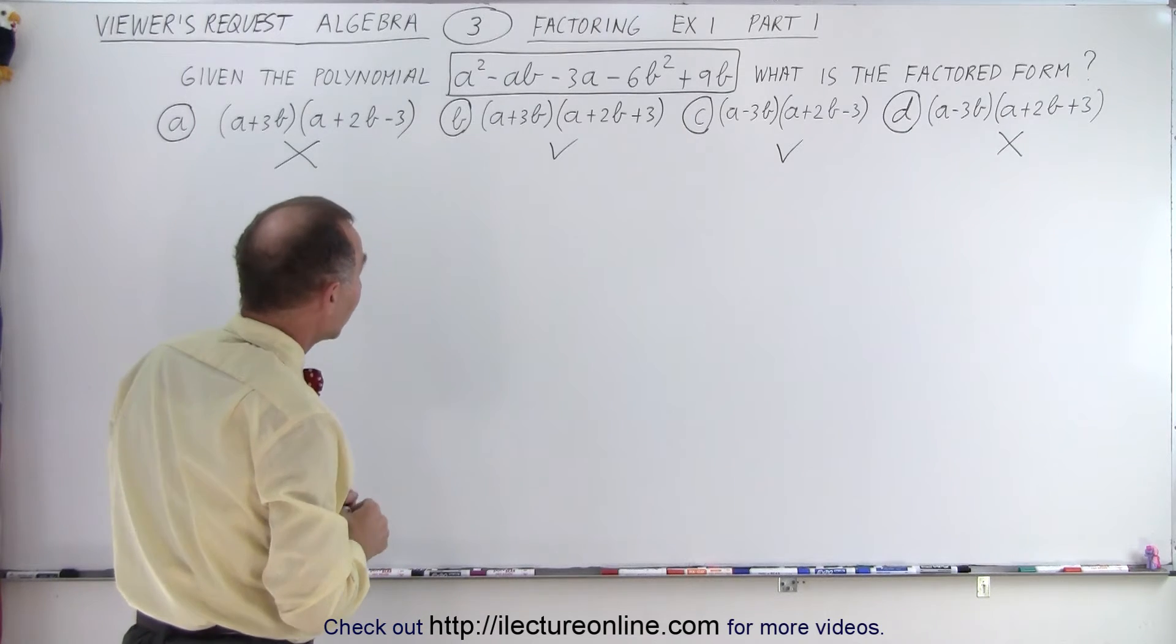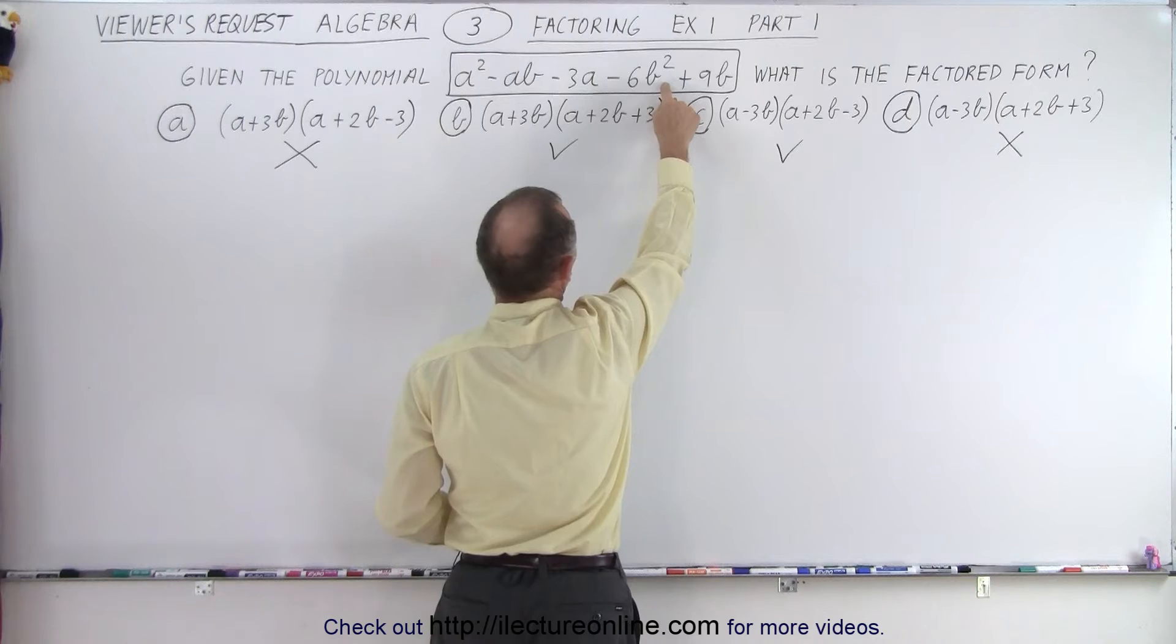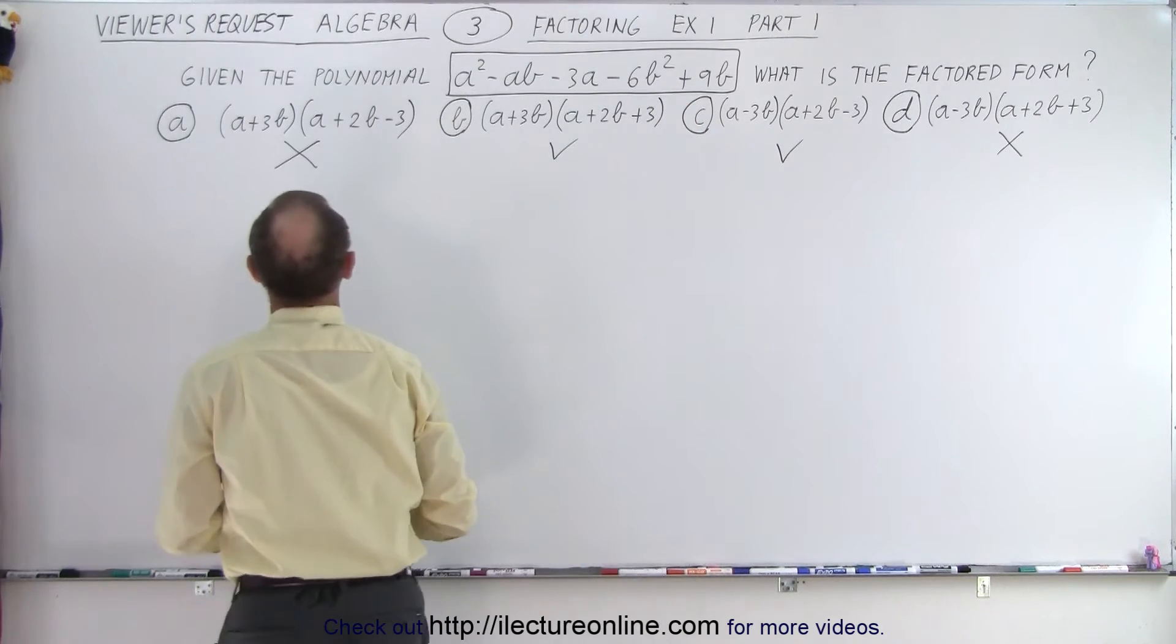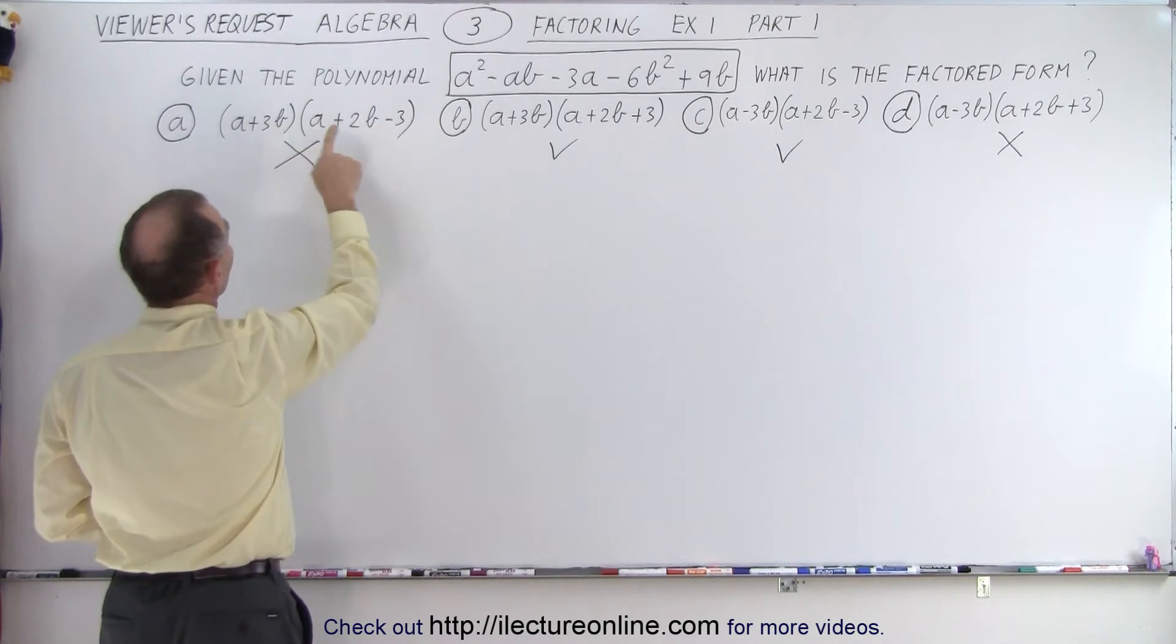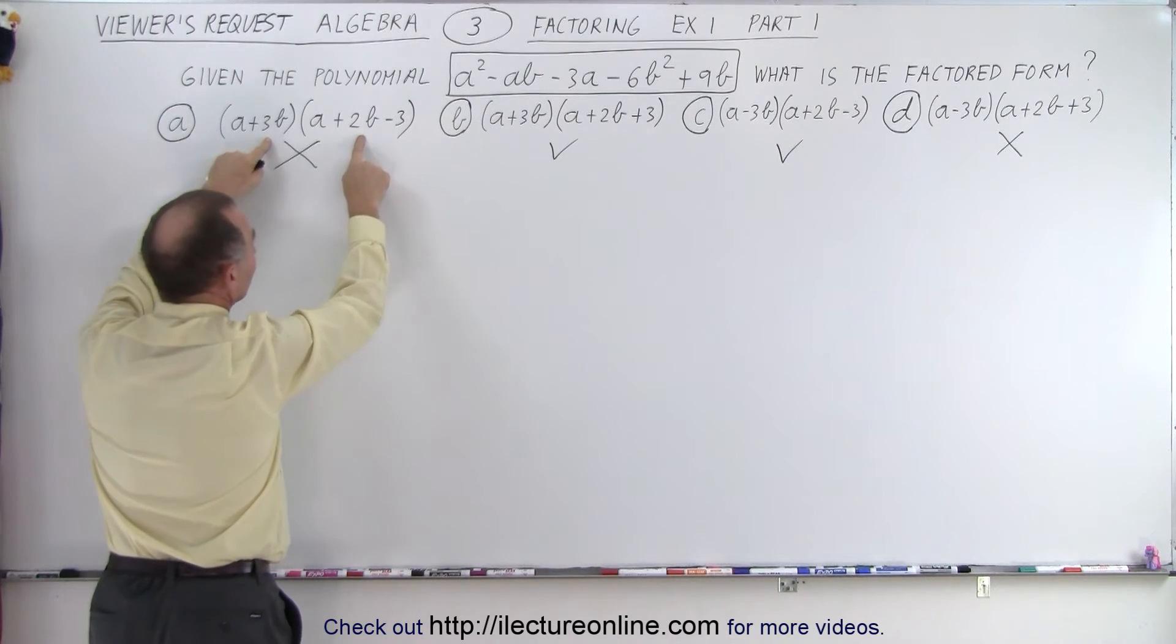Next we're going to look at the next term, minus 6b squared. So here I have a 3b and a 2b, when I multiply those two together I get a positive 6b squared.